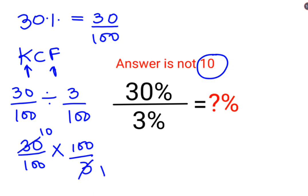The 100s cancel, the 30 and 3 cancel to give 10, so yes, the answer is coming out to be 10.